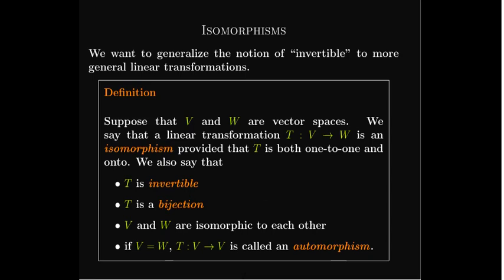Let's look at the formal definition. We have two general real vector spaces V and W. We have a transformation with V as the input space, or domain, and W as the output space, the codomain. This transformation is an isomorphism provided that it is both one-to-one and onto. In that case, we say this transformation is invertible, or a bijection.